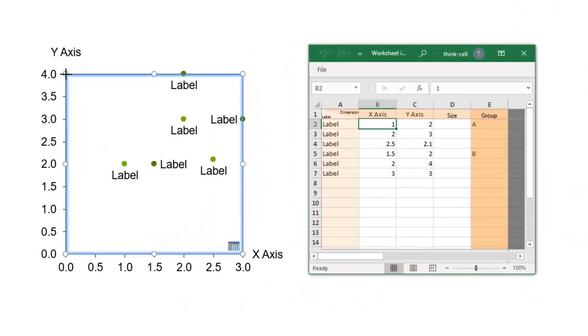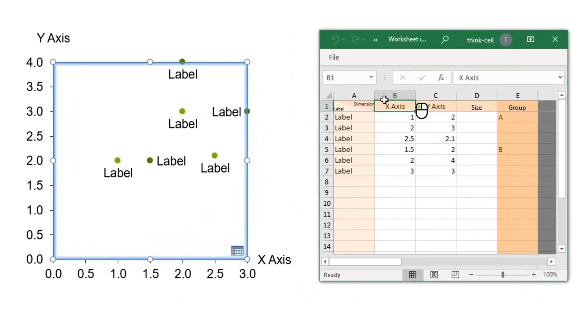In the first row of the datasheet, you can name the two dimensions of your data. Let's put KPI 1 on the x-axis in column B, and KPI 2 on the y-axis in column C.